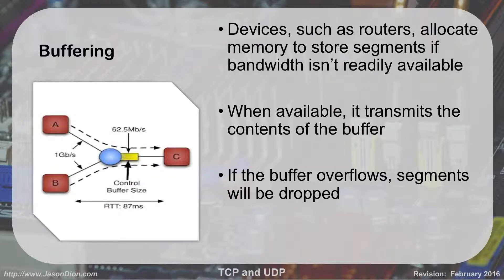Why this matters — inside your network you might have one gigabit per second connections, but your internet provider might give you only 62 megabit per second. If you're sending to the router at one gigabit — which is 1,000 megabits per second — but the router can only send it to the internet at 62.5 megabits, what ends up happening?